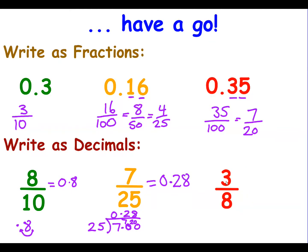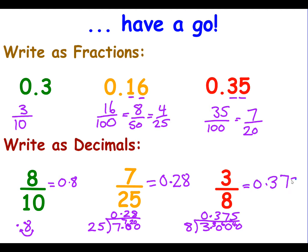Finally, turning 3 over 8 into a decimal: divide 3 by 8. 8 doesn't go into 3, so we put in a decimal point and carry the 3. 8 goes into 30 three times, remainder 6. 8 goes into 60 seven times — 7 eights are 56 — remainder 4. Then 8 goes into 40 exactly 5 times. So the fraction 3 over 8 is the same as the decimal 0.375.